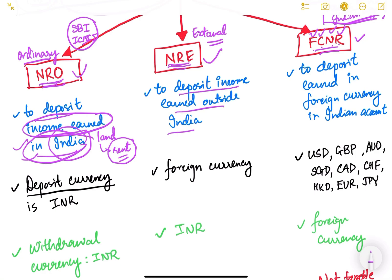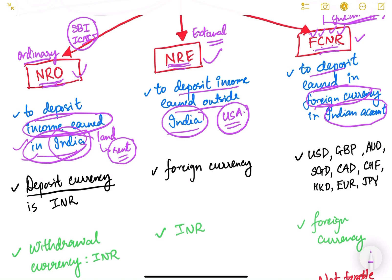The NRE account is used to deposit income earned outside India. For example, if an NRI person is employed in the USA and wants to save some money in India, he can open an NRE account and deposit money there. The FCNR account is again used to deposit income earned in foreign currency into an Indian account. Both NRE and FCNR accounts are used to deposit income earned in a foreign country.